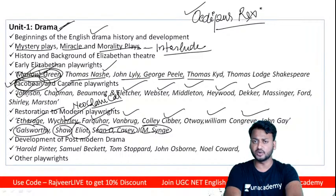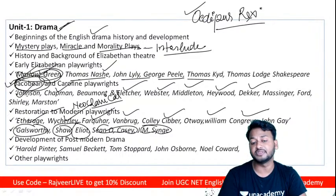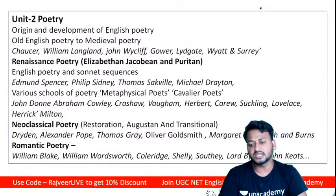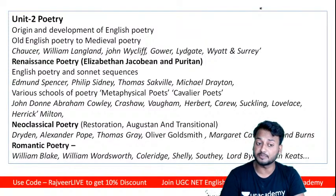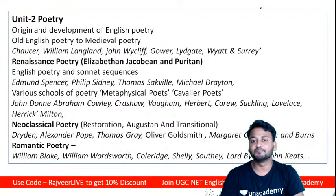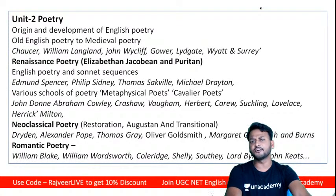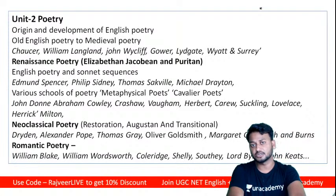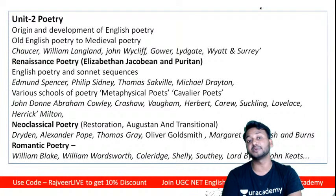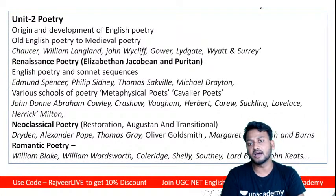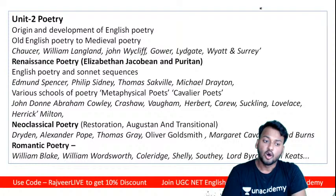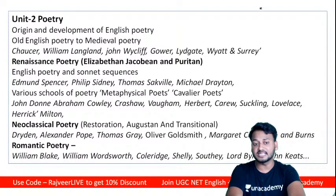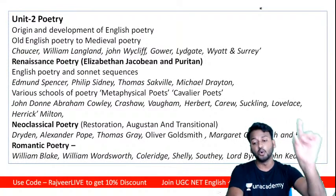Now unit two — Poetry. Poetry is the most ancient, oldest form of writing. You must understand the origin and development of English poetry from the Old English period to the modern period. You've seen epics like Mahabharata, Ramayana, and the English epic Beowulf. Cover the history from Old English to modern.